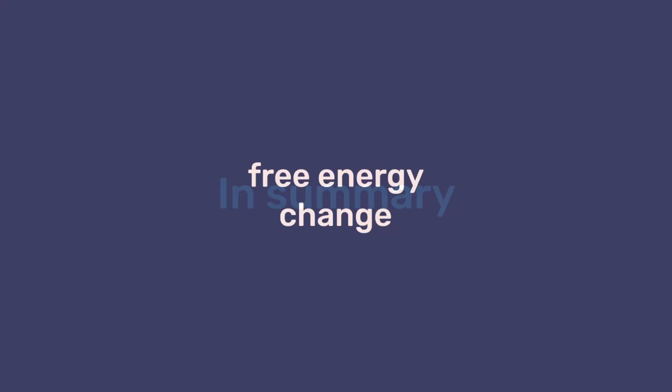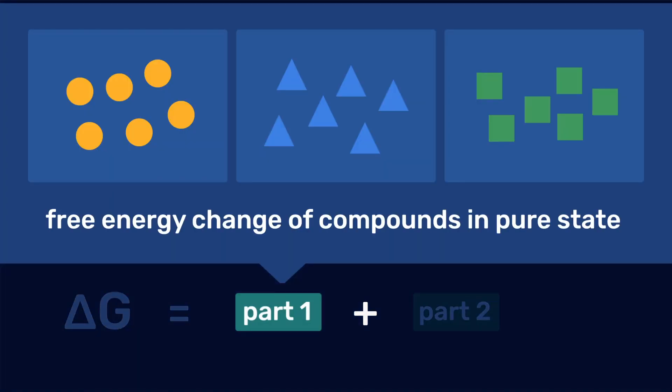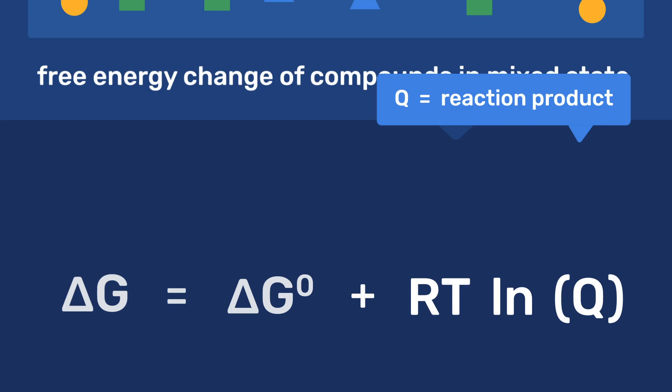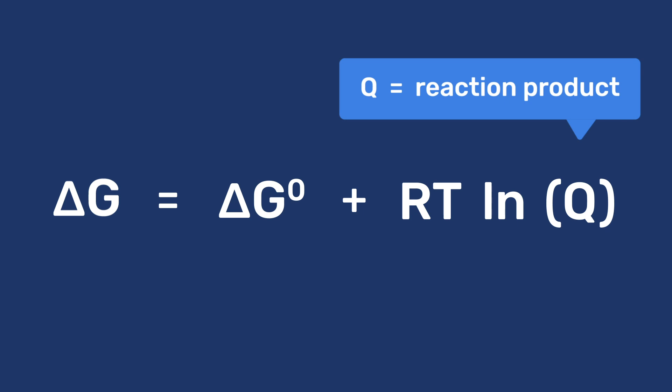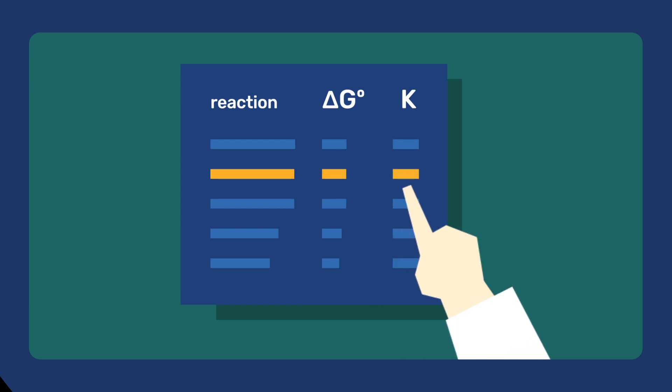In summary, we have seen that the free energy change of a chemical reaction can be divided into two parts, one defined by its pure compounds, ΔG0, and one by their mixing, RTlnQ, where Q is the reaction product. ΔG0 can be looked up in tables and serves to determine K, or vice versa.